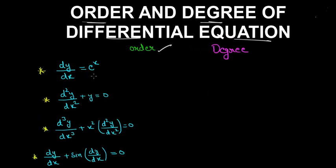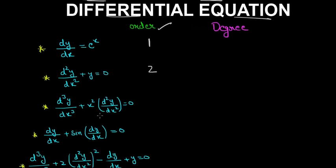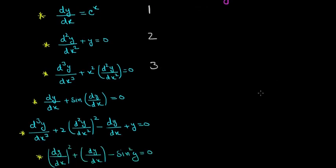In this differential equation, the highest derivative is 1, so its order is 1. Here the highest derivative is 2, so its order is 2. Here the highest derivative is 3, so the order is 3.